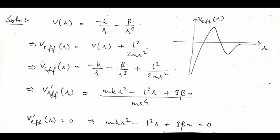If you want to make the effective potential such that it does not contain a centrifugal barrier, we need to ensure the effective potential is a monotonic function with no maxima or minima.